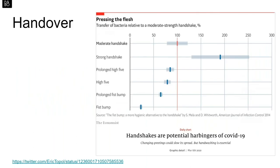Typically I would do a handover that would require either a strong or a moderate handshake, possibly a prolonged high five, maybe just a normal high five or a prolonged fist bump. But given the current situation, I'll just do a virtual fist bump to Charlotta.